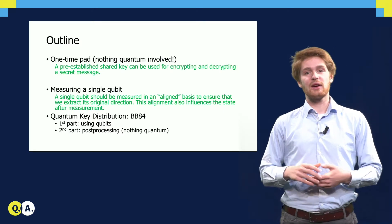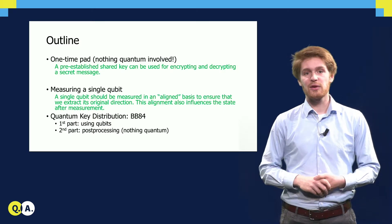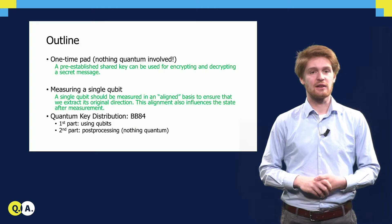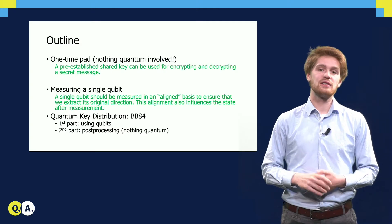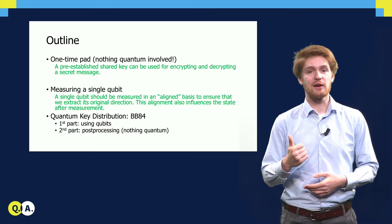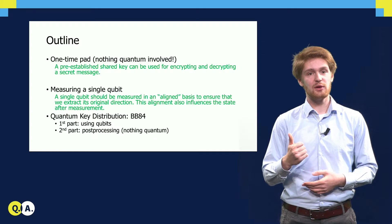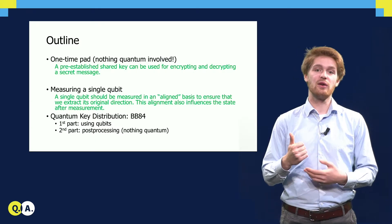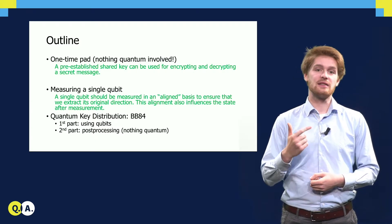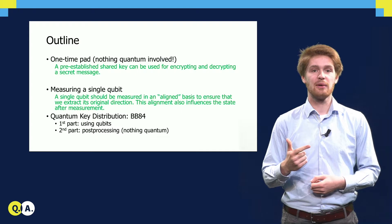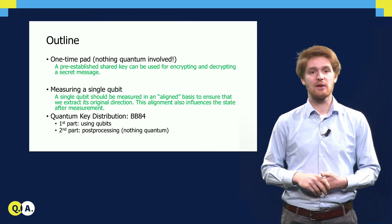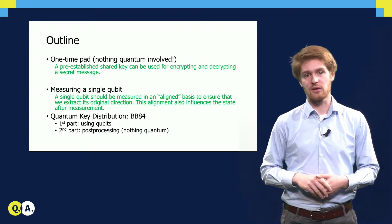Next, we will look at the BB84 protocol for generating a secure shared key. The protocol consists of two parts. In the first part, we use qubits for encoding classical information. And the second part is a post-processing step, which does not involve any quantum operations at all.